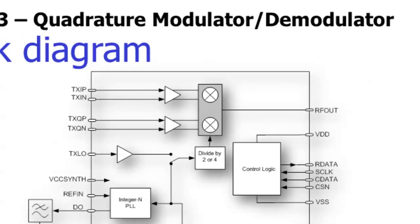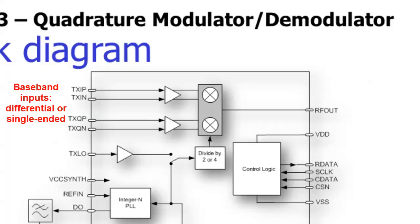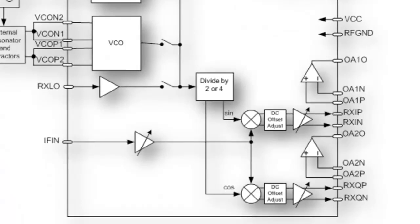The CMX973 transmit path translates the baseband inputs to a modulated RF signal. The baseband inputs can be applied to the CMX973 differentially or in a single-ended fashion. The modulator provides excellent image suppression, carrier suppression, linearity, and noise floor performance.